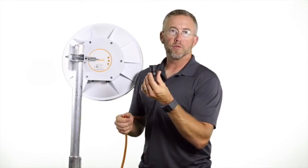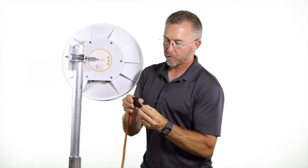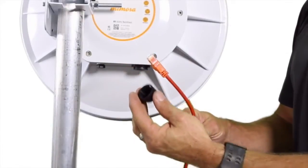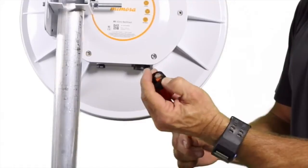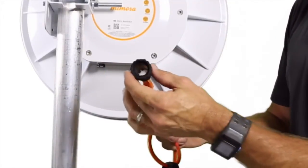Then we have the boot that attaches underneath the radio at the point of connection. Start by unscrewing the back nut. Place the back nut over the connector first. Slide the body of the boot over the connector.